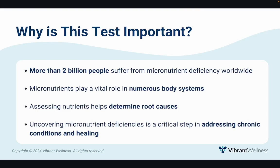Why is this test important? More than 2 billion people suffer from micronutrient deficiency worldwide. Micronutrients play a vital role in energy production, hemoglobin synthesis, maintenance of bone health, adequate immune function, and protection of the body against oxidative stress and cellular damage. Assessing intra- and extracellular nutrient levels is the only way to objectively determine root causes of malnutrition and inflammation — differentiating between dietary, genetic, and other factors that impair nutrient metabolism or absorption. Uncovering micronutrient deficiencies is an easy and critical step in addressing chronic conditions and healing.